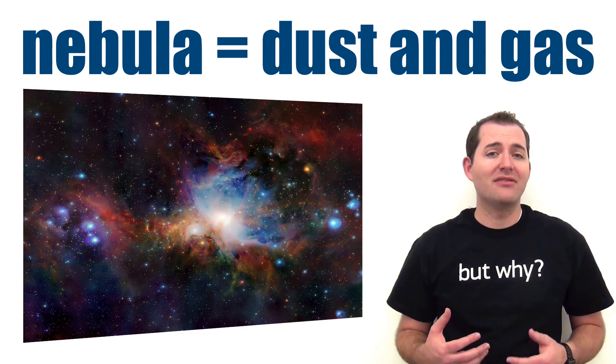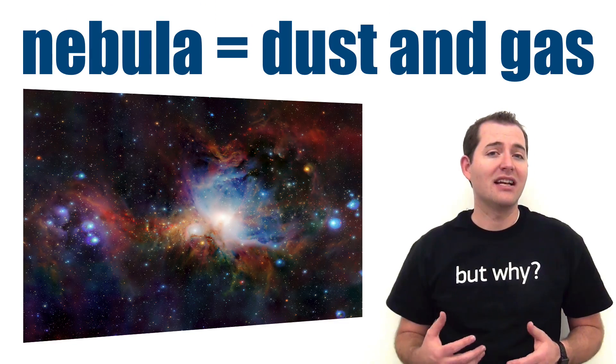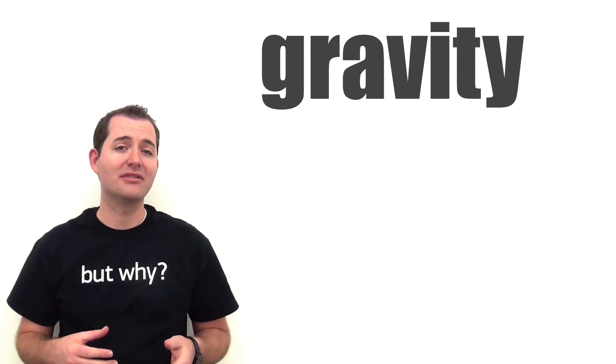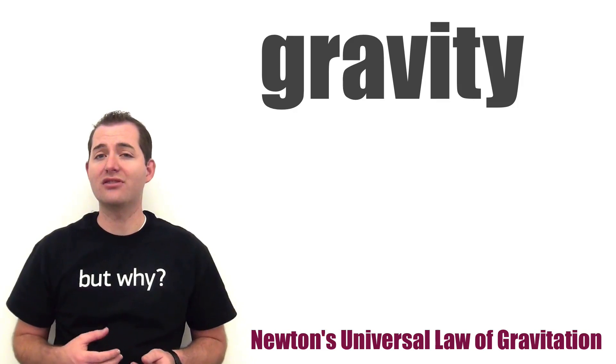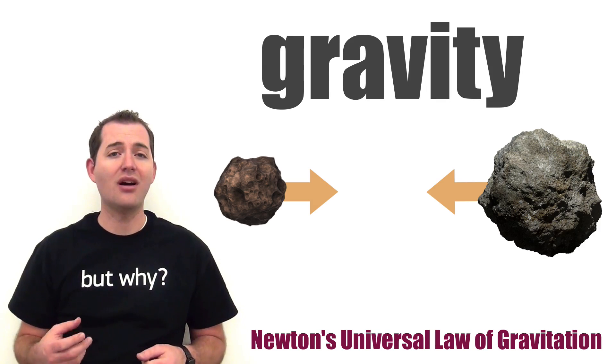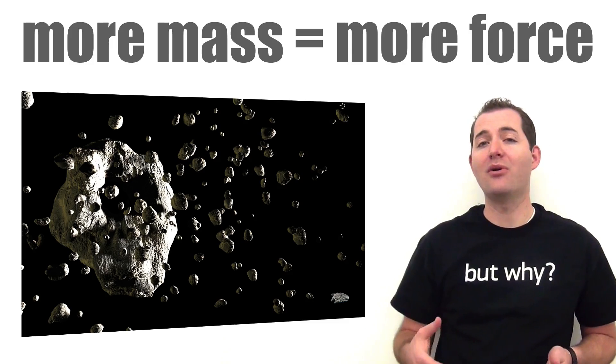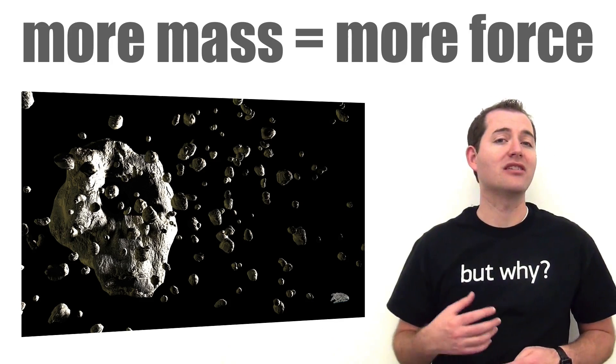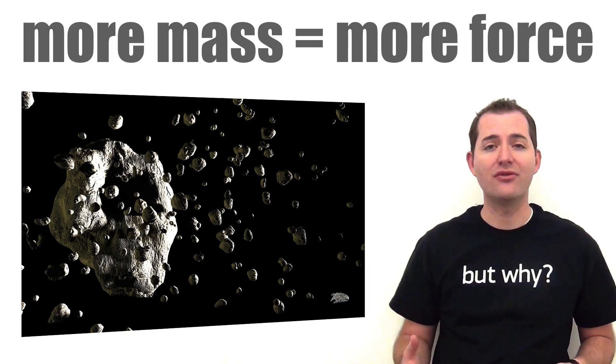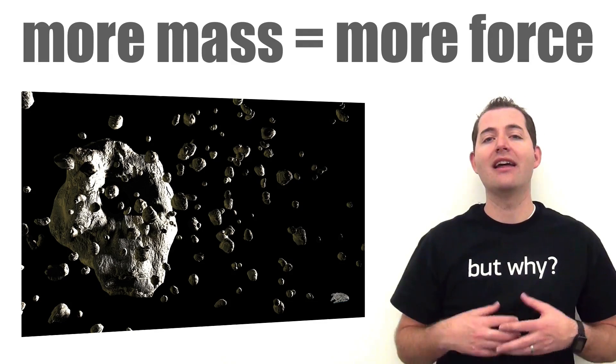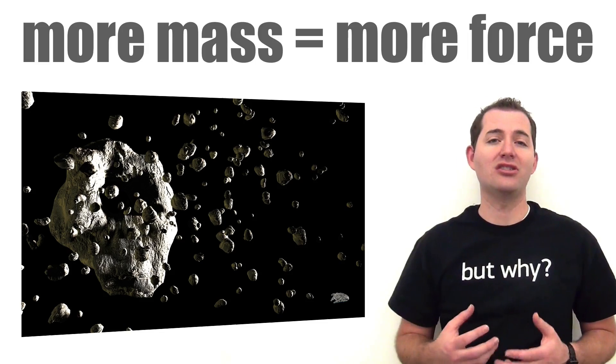All of this started with a nebula, a massive and dense cloud of dust and gas such as hydrogen. Gravity caused this matter to begin to coalesce into clumps. According to Newton's universal law of gravitation, any two objects with mass will exert a gravitational force between them. As we add more mass to this clump, it will exert a greater gravitational force on other objects and pull them to itself, making this clump larger and larger.